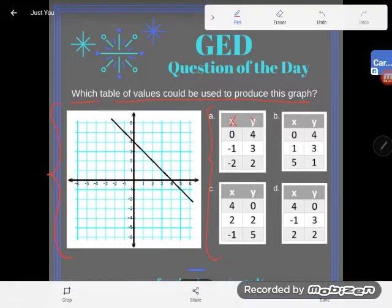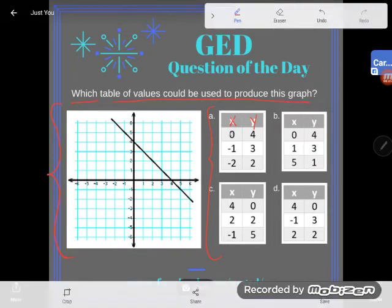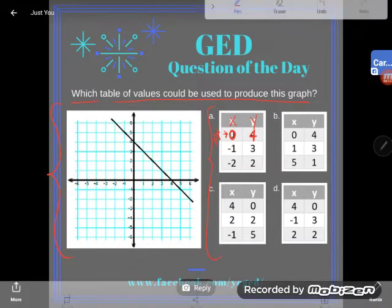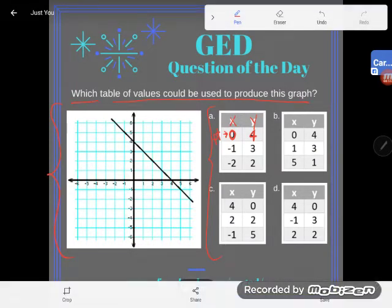What I want you to notice about each of these tables of values is the titles. We see an X column, we see a Y column. So what does this mean? This means that when X is 0 in this particular table, Y is 4. That is a point, recognize it or not, that is a coordinate pair that makes up a point.